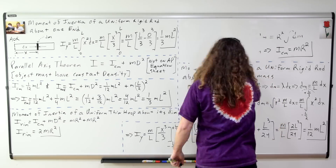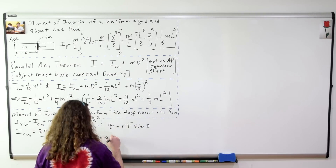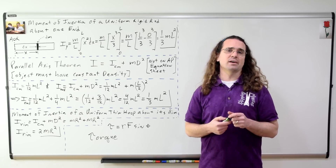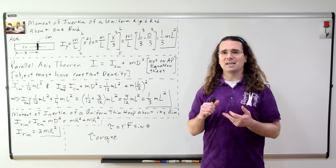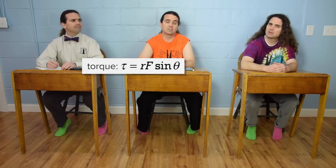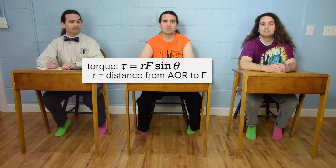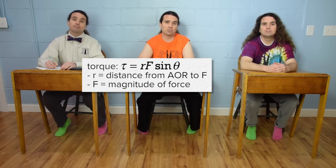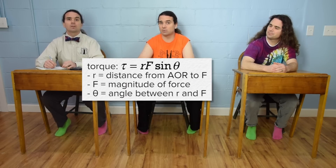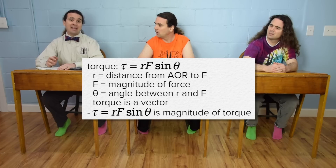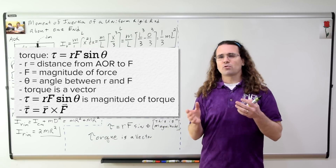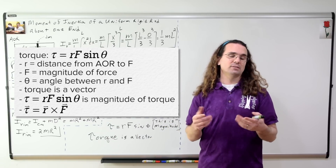Next up is the concept of torque. The symbol for torque is the lowercase Greek letter tau, and it equals R times F times sine theta. R is the distance from the axis of rotation to where on the object the force is applied. F is the magnitude of the force causing the torque. Theta is the angle between R and F. We should point out that torque is a vector and that equation gives only the magnitude of the torque. Torque is actually the cross product of R and F, but we will cover the cross product equation in the next review session.